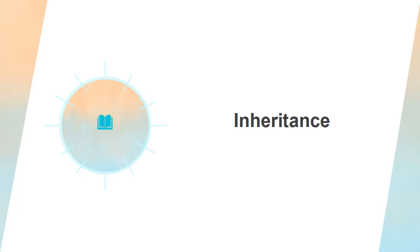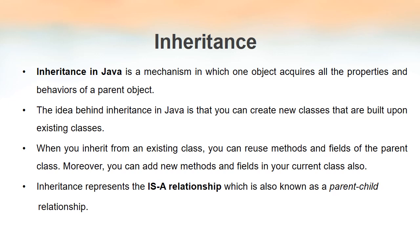First of all, we will see what is inheritance and how we can implement it. Inheritance has been defined before when we discussed about object-oriented programming concepts. It is one of the most important concepts in OOP. Inheritance is a mechanism by which one class can acquire the properties of another class. The main idea is that you can build one class based on another class — you can create new classes based on existing classes.